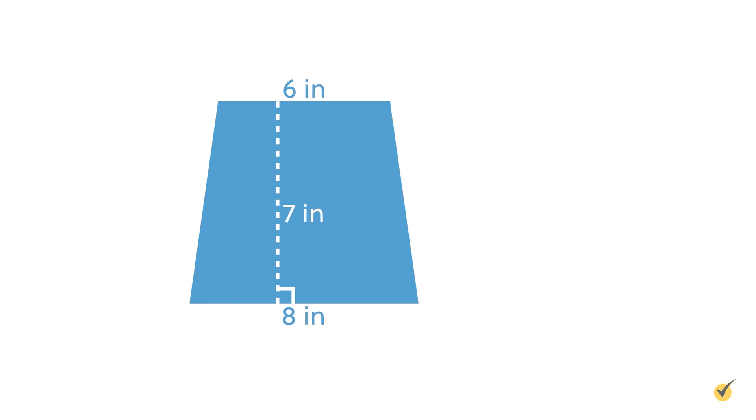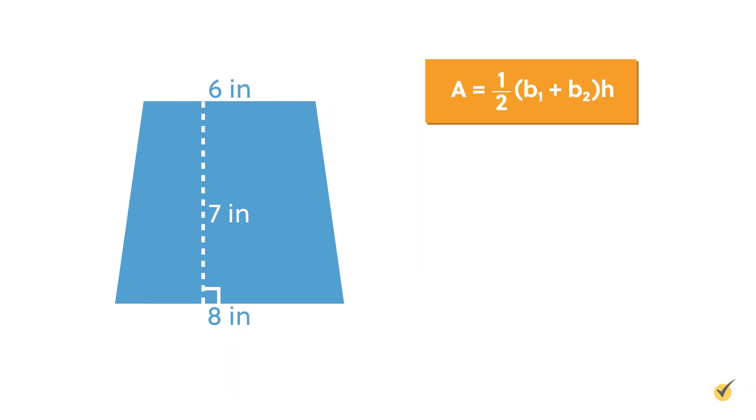We can substitute our numbers into the formula for the area of a trapezoid. A equals one-half times 8 plus 6 times 7.